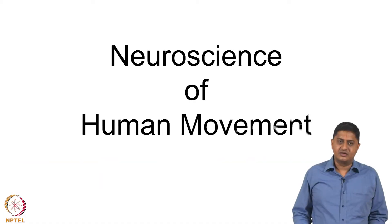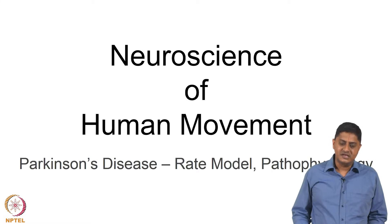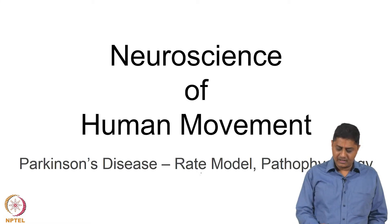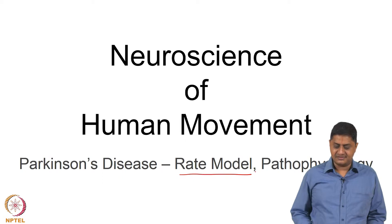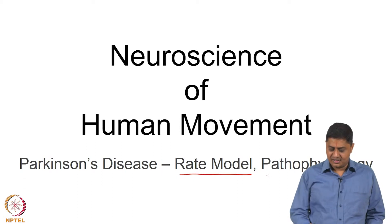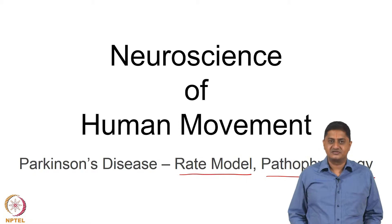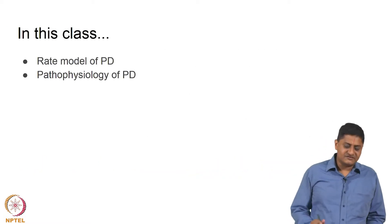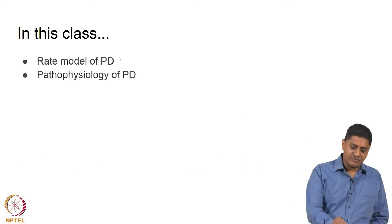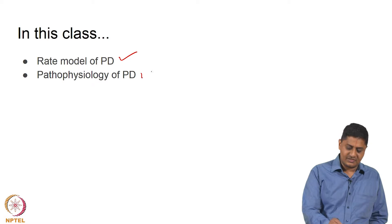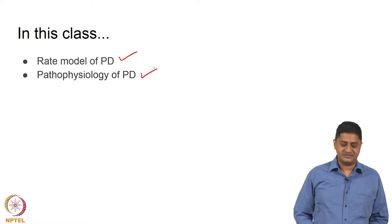Welcome to this class on Neuroscience of Human Movement. In this class we will discuss a specific disorder of the Basal Ganglia, that is Parkinson's disease, one particular model of Parkinson's disease, and whatever pathophysiology of Parkinson's disease that we know about. We will discuss the rate model of Parkinson's disease and its pathophysiology.